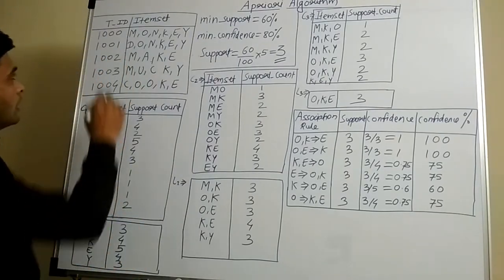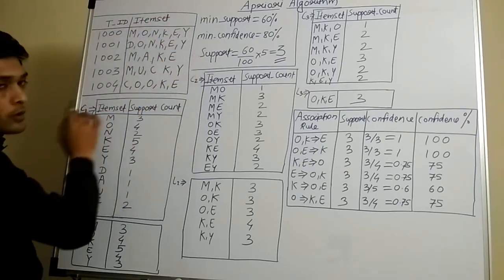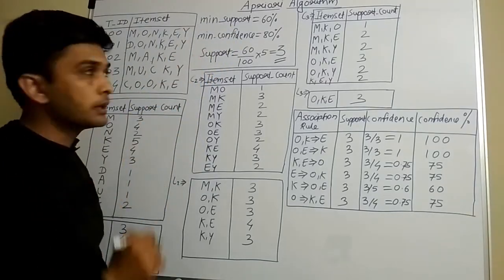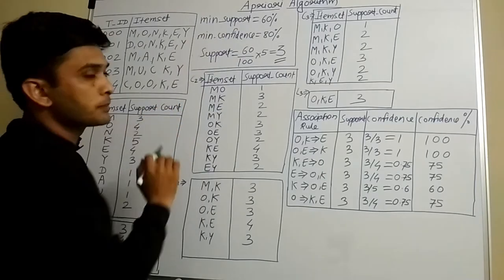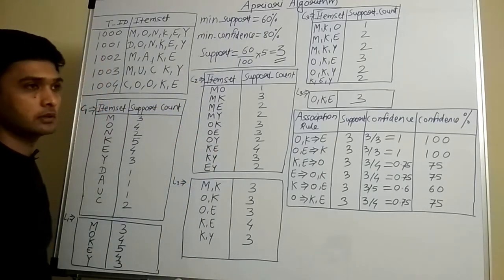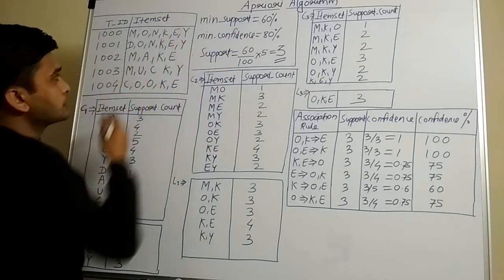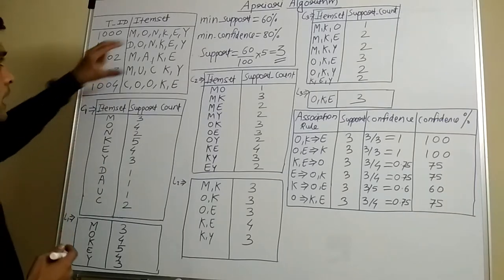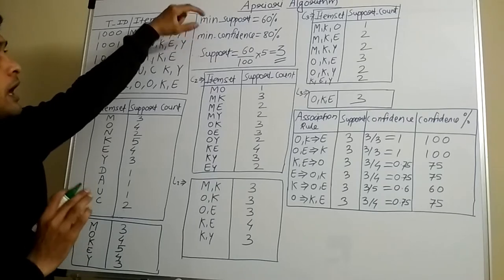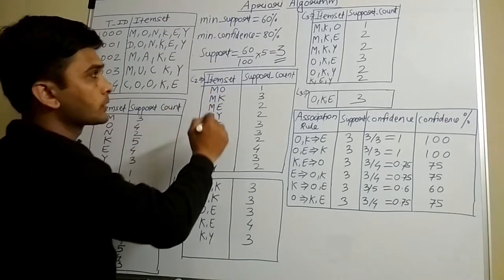As given in this particular example, we are given these five records. We are also given minimum support equal to 60% and minimum confidence equal to 80%. This particular data, along with minimum support and minimum confidence, is given to us, and we are going to find out the association rules by using the Apriori algorithm.